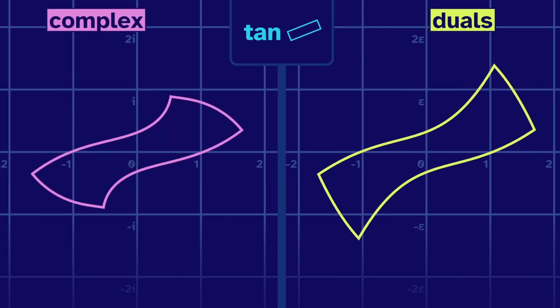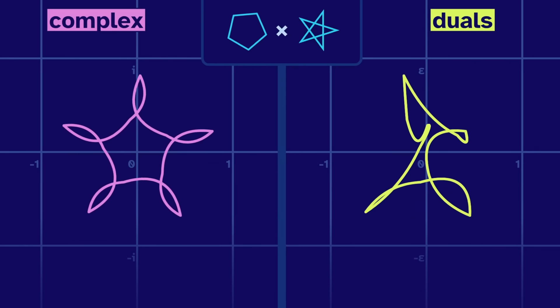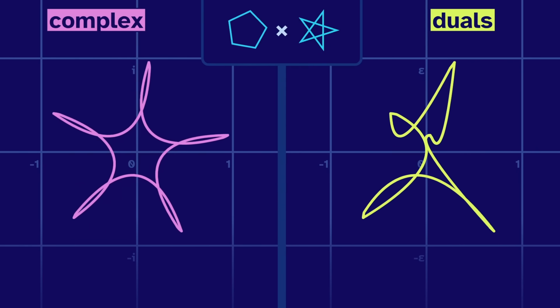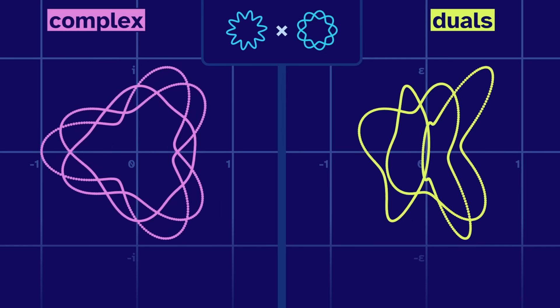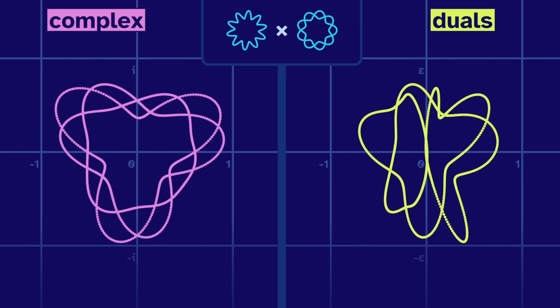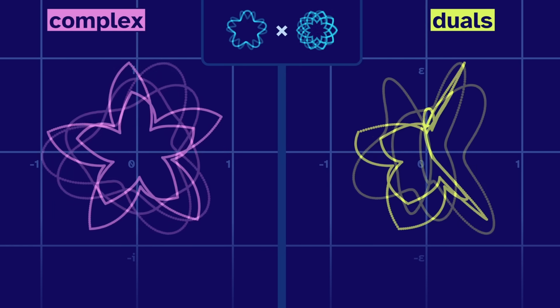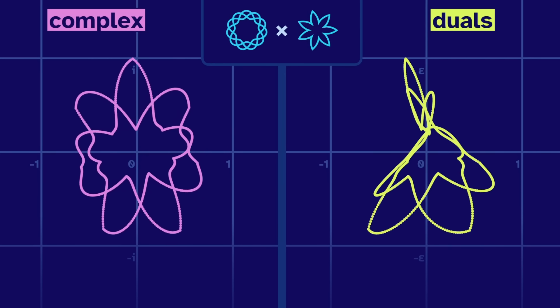To mix things up again, let's use two shapes. A pentagon times a star. The complex result is straightforward, but the dual is wiggly and weird. What about this product? Now they're both wiggly and weird. But the dual is wigglier and weirdier. Let's try some more shapes. Now it's getting real fun. And for even more fun, let's try division.